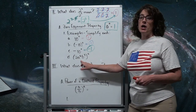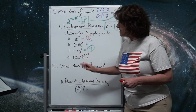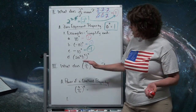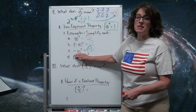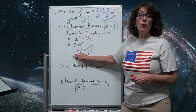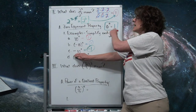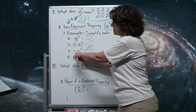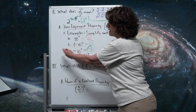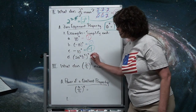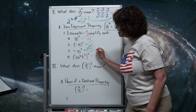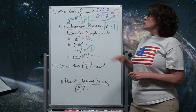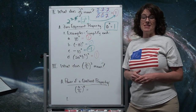The last zero exponent example has a whole bunch of stuff inside parentheses. Again, I don't care what's inside — it's parentheses to the zero power, so it's just 1. Anything to the zero power is 1, unless there's a negative sign outside without parentheses, in which case you do the zero power and then change the sign.